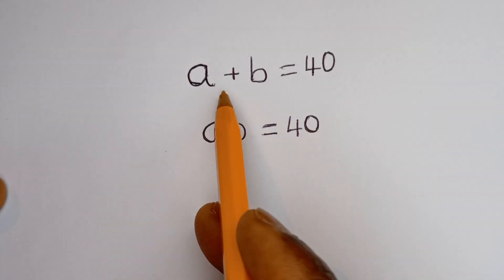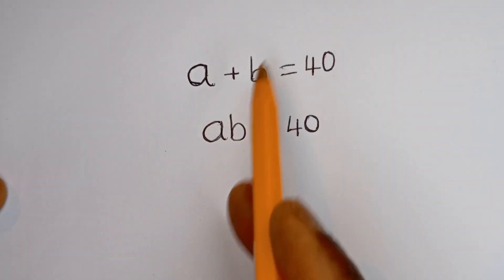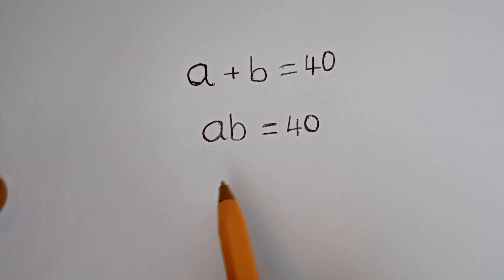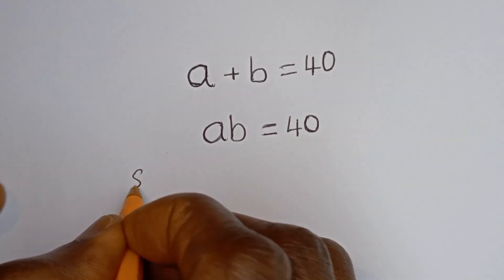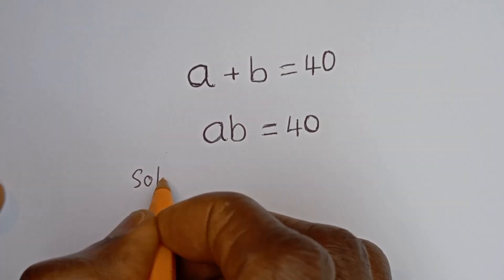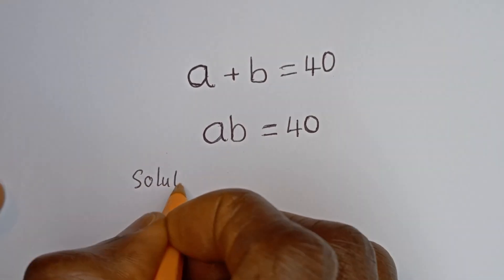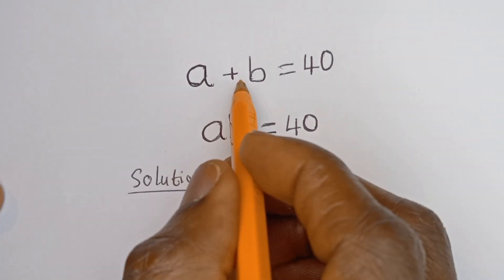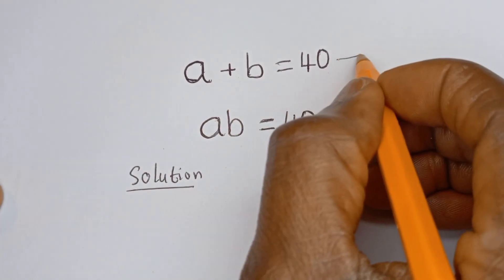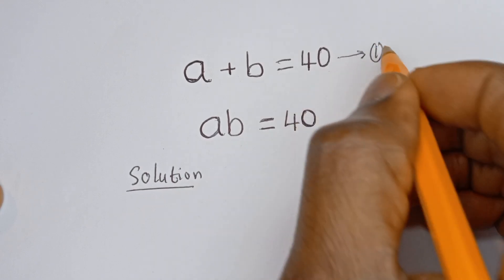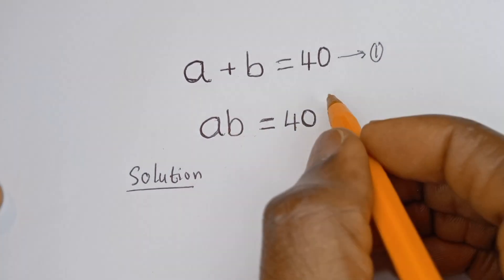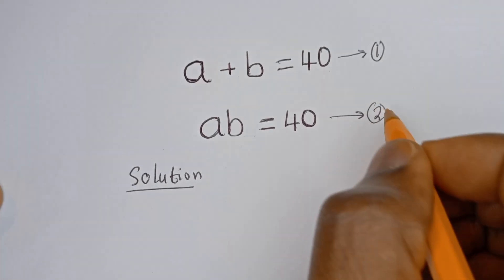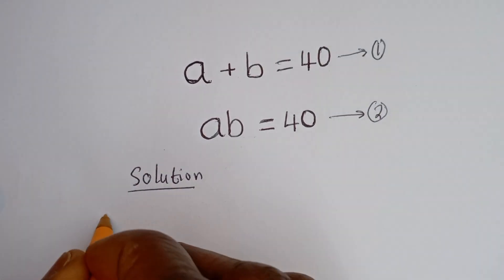Hello. How to solve for A and B in this equation: A plus B is equal to 40, and A times B is equal to 40. Let's call A plus B = 40 equation 1, and AB = 40 equation 2.